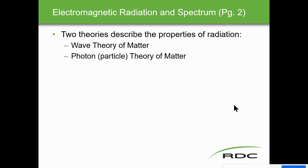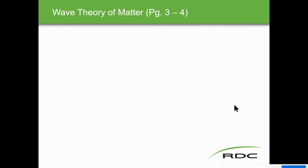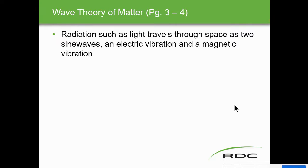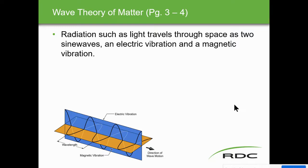Two theories describe the properties of radiation: wave theory of matter and photon (particle) theory. Radiation such as light travels through space as two sine waves — an electrical vibration and a magnetic vibration. The electrical vibration travels in waves shown in blue, while the magnetic vibration travels on the horizontal plane in orange. These two vibrations travel together as radiation and light.